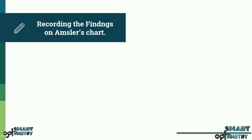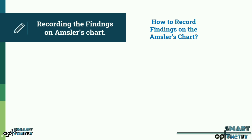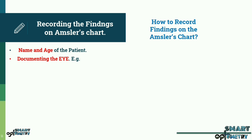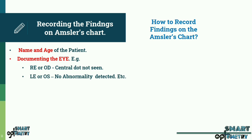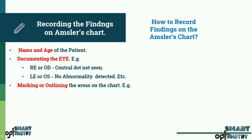Recording the findings on Amsler's chart. The following data needs to be recorded: the name and age of the patient along with the date on which the test is performed; documenting the eye to which the chart showing changes belongs when both eyes were tested uniocularly with separate Amsler's grids used for each eye — for example, right eye or OD: central dot not seen; left eye or OS: no abnormality detected. Also, marking or outlining the areas on the chart that showed changes as indicated by the patient and describing them in the patient's own words.